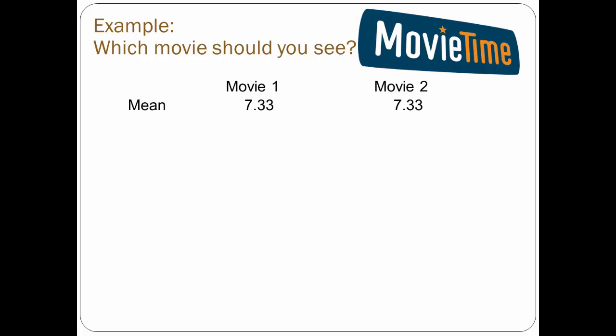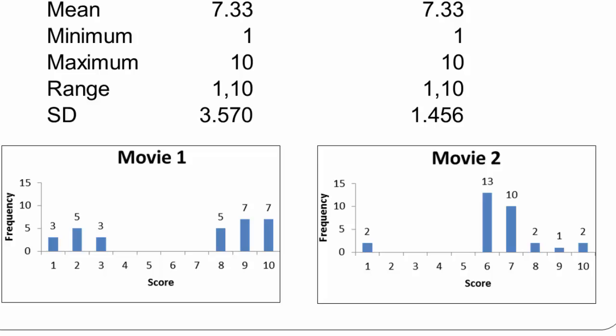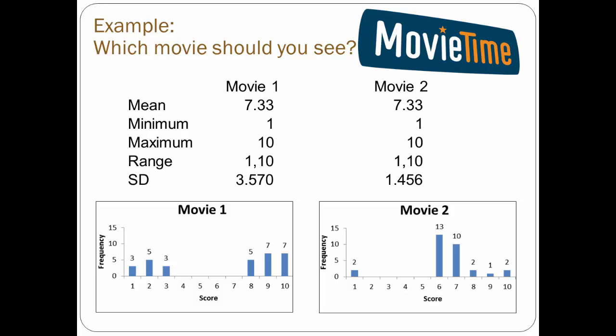So you look at the measures of dispersion — in particular the minimum, maximum, and range — which are also the same for both movies, ranging from a minimum of 1 to a maximum of 10. Now it's time to calculate the standard deviation. The standard deviation for the first movie is 3.570 versus 1.456 for the second. This tells you there is more variation in the first movie's scores — spread out widely — while the second movie's scores are much closer together. Graphing the data confirms the majority of friends rated the second movie at 6 or better, while for the first, friends either loved it or hated it. I'd recommend the second movie — it's a safer bet.